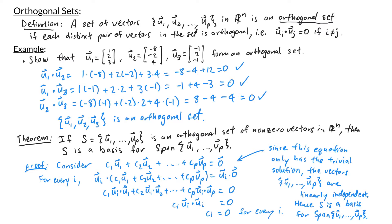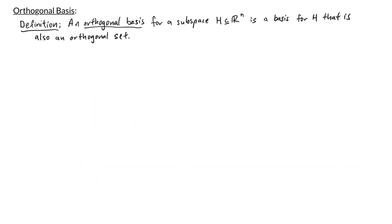It's very useful to have a basis consisting of orthogonal vectors. A set of vectors is an orthogonal basis for a subspace H if it's a basis for H that is also an orthogonal set. The reason we want an orthogonal basis is that it makes it easy to write vectors as a linear combination of the basis vectors.